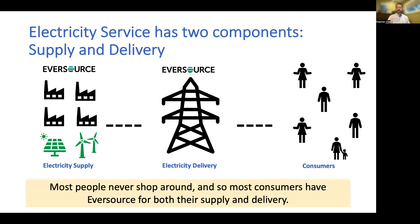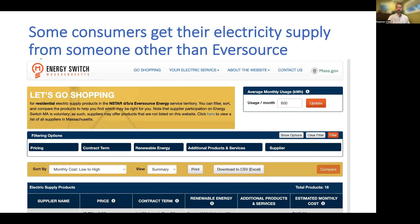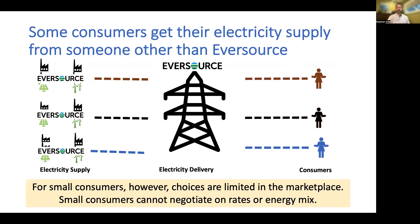This is often referred to as Eversource's basic service, but it is not the only electricity supplier option customers have. Consumers already have the option to choose a different supplier by shopping for deals on EnergySwitchMA.gov, a website the Massachusetts Department of Public Utilities developed to assist consumers in shopping for electricity suppliers. If a consumer chooses a different electricity supplier, Eversource still delivers the electricity via its power lines, maintains the lines, provides customer service, and sends out bills. However, the supply may come from a different source.